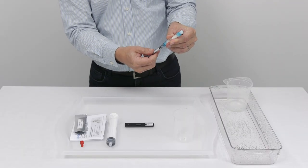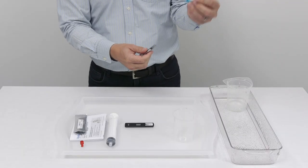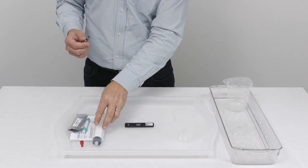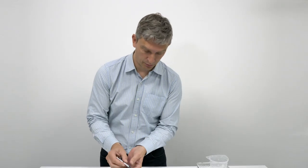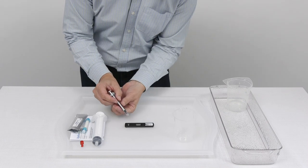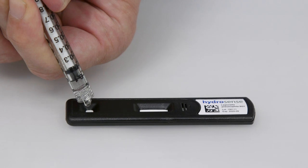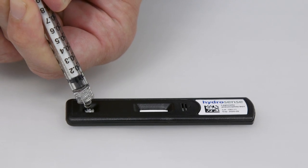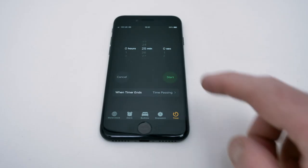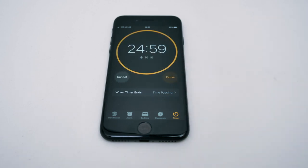So now we can detach the syringe in a twisting motion from the filter, place the filter to one side, and then we can add the 0.1 mils of sample to the sample port on the cassette by depressing the plunger. And at this point we would start a timer for 25 minutes and then read the test after 25 minutes and no longer than 30 minutes.